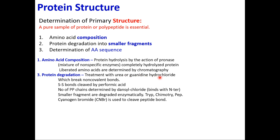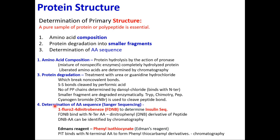Urea and guanidine hydrochloride can be used with or without pronase. The number of polypeptide chains obtained equals the number of N-terminal ends to which the reagent has attached. Then the sequences are determined. There are two types of sequencing: Sanger sequencing, using FDNB (1-fluoro-2,4-dinitrobenzene) developed by scientist Sanger; and Edman sequencing, using phenyl isothiocyanate developed by Edman.